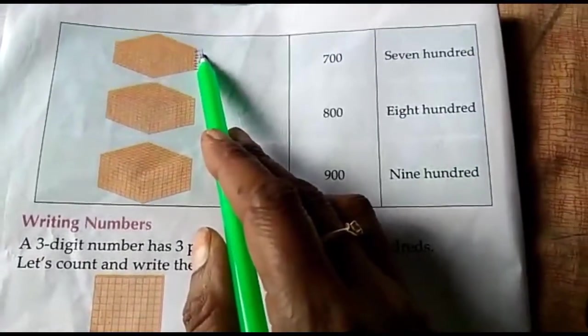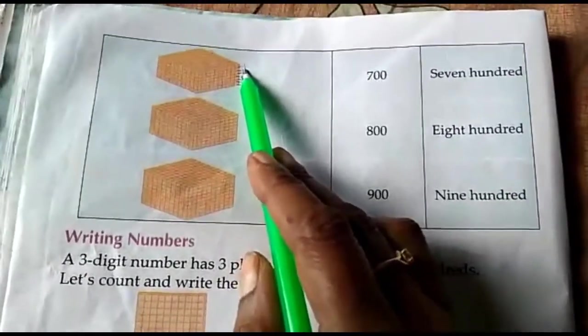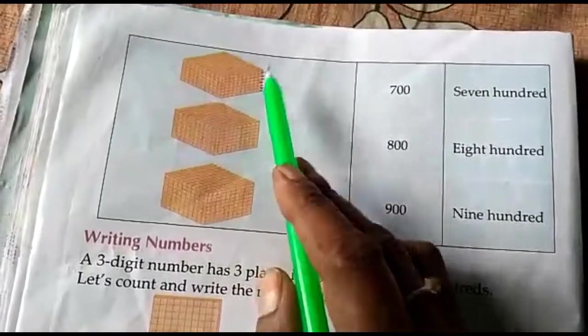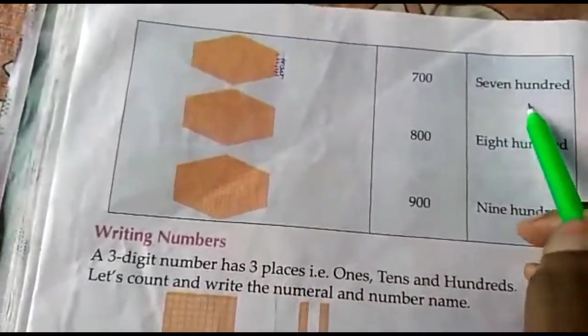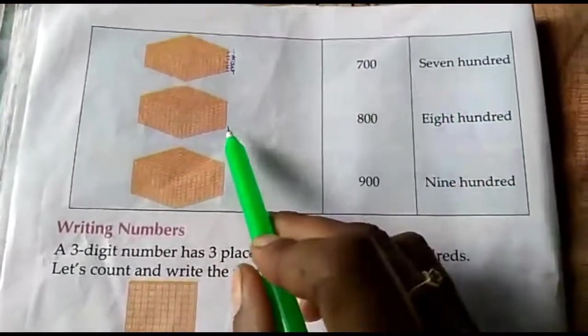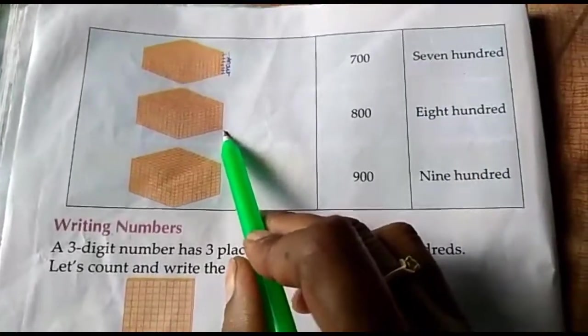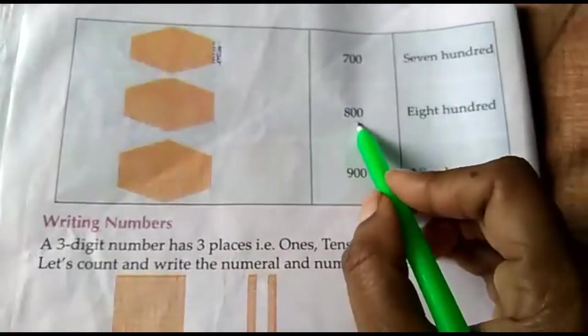Seven hundred. Seven hundred. It means seven hundred boxes. And seven hundred number. Seven hundred spelling. Eight hundred boxes. Eight hundred.